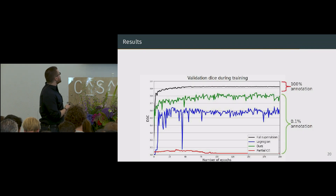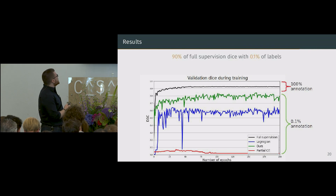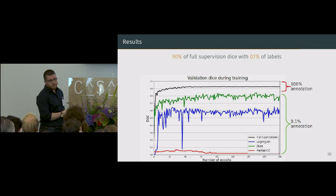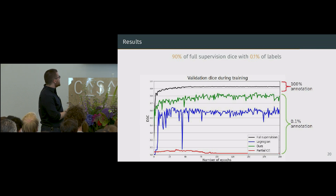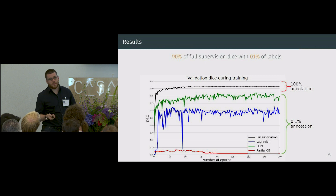When we plot the validation Dice over training, we can see that full supervision is doing better and more stable. But we are still able to reach 90% of the full supervision Dice with only 0.1% of pixels having a label. Adding constraints really makes it work. The Lagrangian method is more unstable, especially at the beginning, and shows a big difference in performance — still probably because of the standard gradient method.